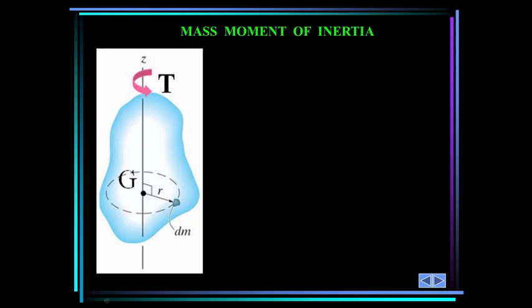Consider this rigid body shown in blue. It has a center of mass at point G, and it is free to rotate about the Z axis which passes through G. Now if you apply a torque T about the Z axis to the body, the body begins to rotate with an angular acceleration of alpha. As we'll see in section 17.2, this torque is equal to the mass moment of inertia times alpha. So I is the mass moment of inertia. The mass moment of inertia of a body is a property that measures the resistance of a body to angular acceleration.